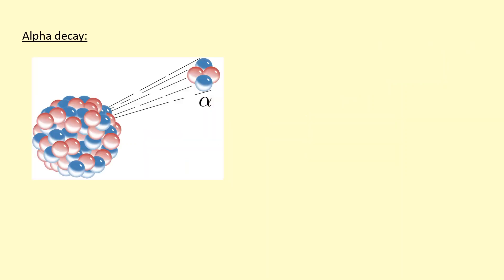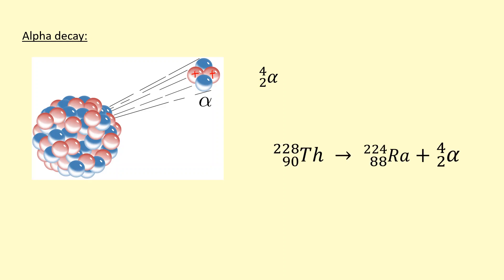One of the possible decays is an alpha decay. This tends to happen when the nucleus is a bit too large, and it emits two protons and two neutrons straight out of the nucleus. The symbol for the alpha particle is four over two. It doesn't have any electrons on the outside — it's basically just a helium nucleus. When this gets ejected, for example with thorium, you can see the proton number goes down by two and the mass number goes down by four, and the top numbers on both sides of the equation must be equal.